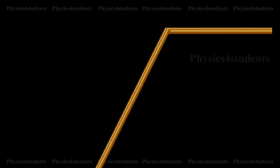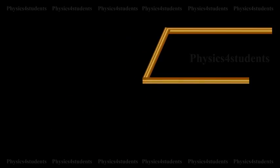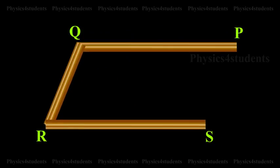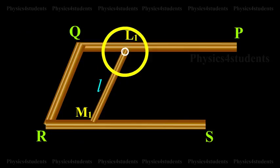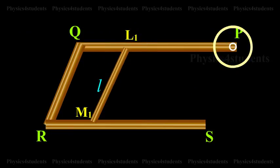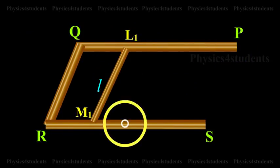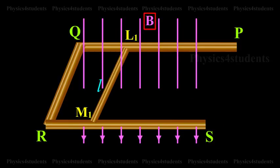PQRS is a conductor bent in the shape as shown in the animation. L1M1 is a sliding conductor of length L resting on the arms PQRS. A uniform magnetic field B acts perpendicular to the plane of the conductor.